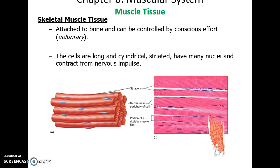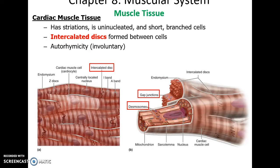Skeletal muscle tissue attaches to bones and is voluntarily controlled. The cells are long and cylindrical, heavily striated, have many nuclei per cell, and are activated by nerve impulses. Cardiac muscle tissue cells are also cylindrical but much shorter and sometimes branch. They have striations similar to skeletal muscle cells and have dense protein interactions between cells called intercalated discs.